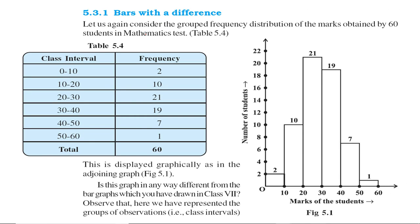Bars with a difference. We have this grouped frequency distribution - say we have marks obtained by 60 students in mathematics class. Number of students who secured marks between 0 to 9 - there are 2, between 30 to 40 - 19, and so on. This can be displayed graphically in a graph.